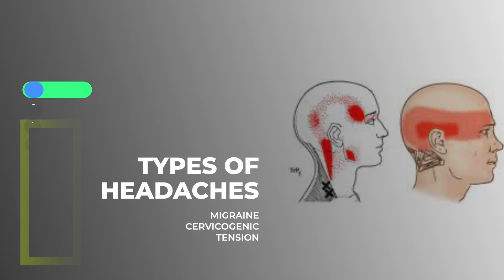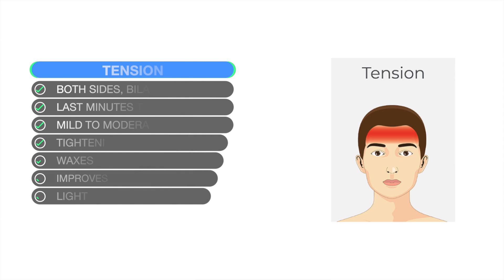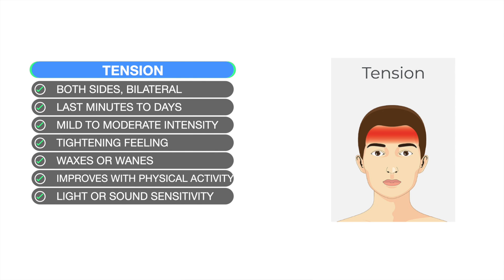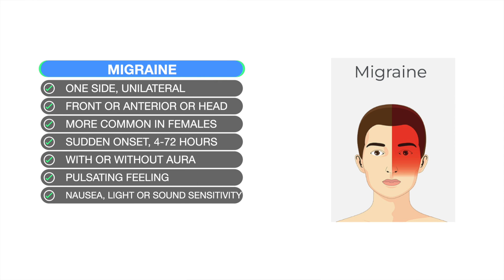Cervicogenic headache: it's on the top or back of your head, generally in people over 30, with a gradual onset. Flexing or bringing your chin down increases your headache, and there's no nausea, light sensitivity, or sound sensitivity. Tension headache: bilateral, lasting minutes to days, mild to moderate intensity, with a tightening feeling that waxes and wanes, improves with physical activity, and may have light or sound sensitivity but not both. Migraine: affects one side, often the front of the head, more common in females, lasts four to 72 hours, with a pulsating feeling and nausea, light sensitivity, and sound sensitivity.